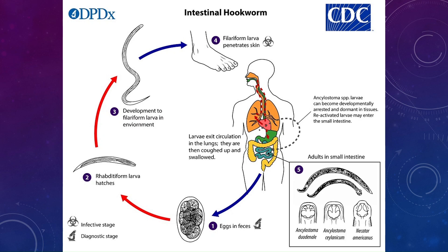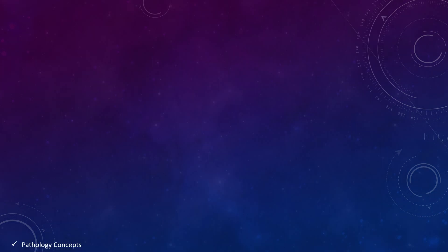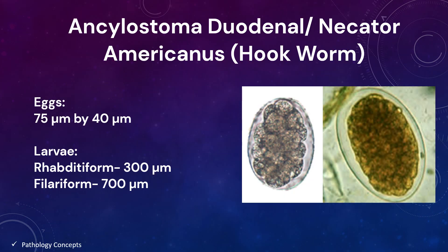After skin penetration, the larva enters the circulation and reaches the lungs. From there, larvae are coughed up and swallowed, reaching the small intestine. Alternatively, larvae can become developmentally arrested and remain dormant in tissues, later being reactivated. Reactivated larvae may enter the small intestine, where larvae become adults and shed eggs in the feces, completing the cycle.